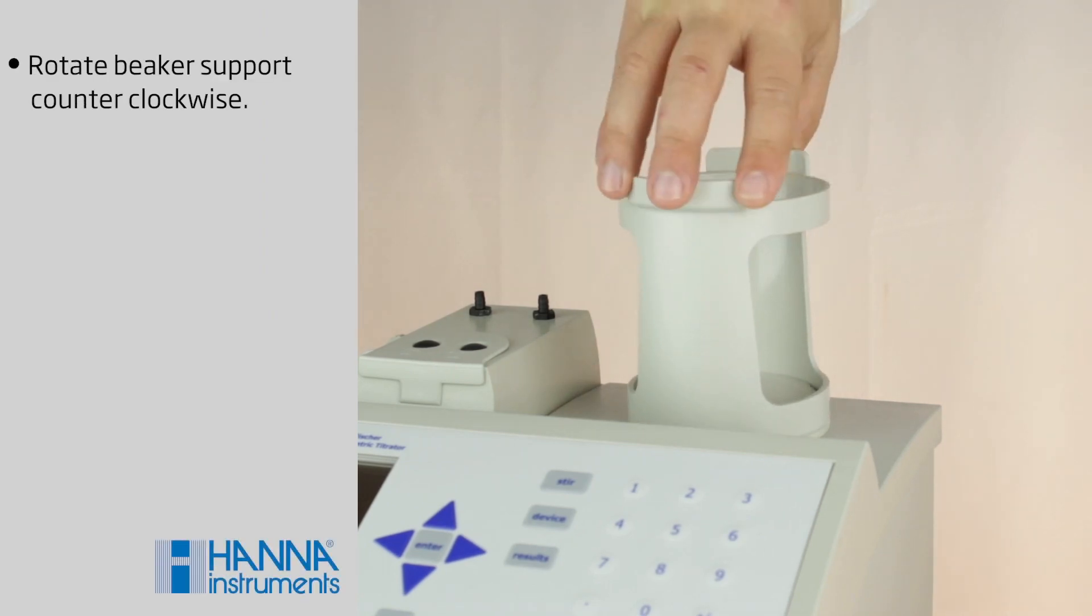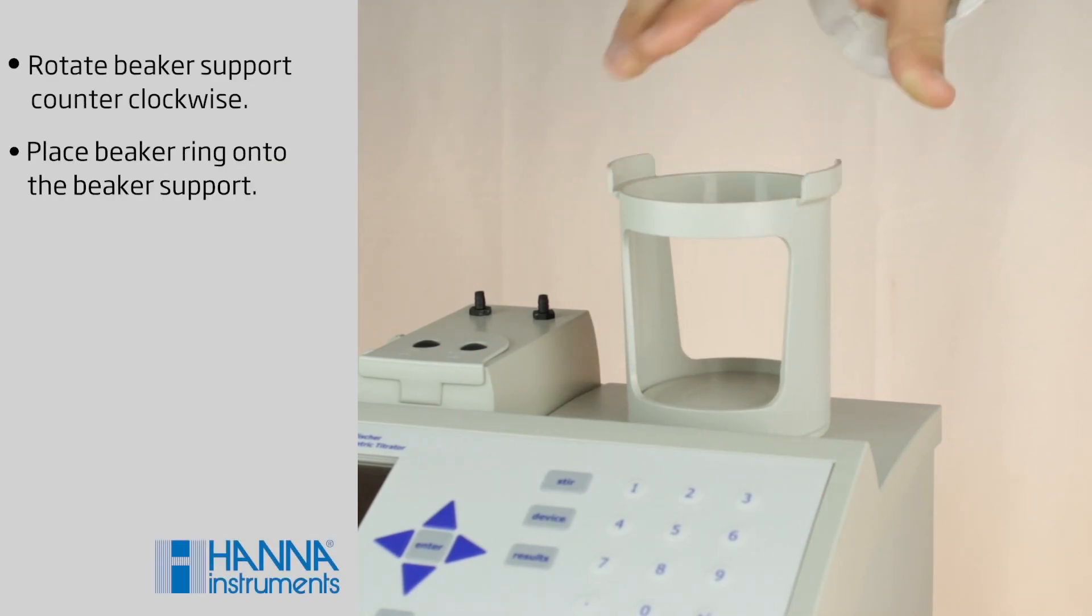Then, place the beaker ring onto the support and align with notches on top. Insert the glass beaker into the ring and add the stir bar.